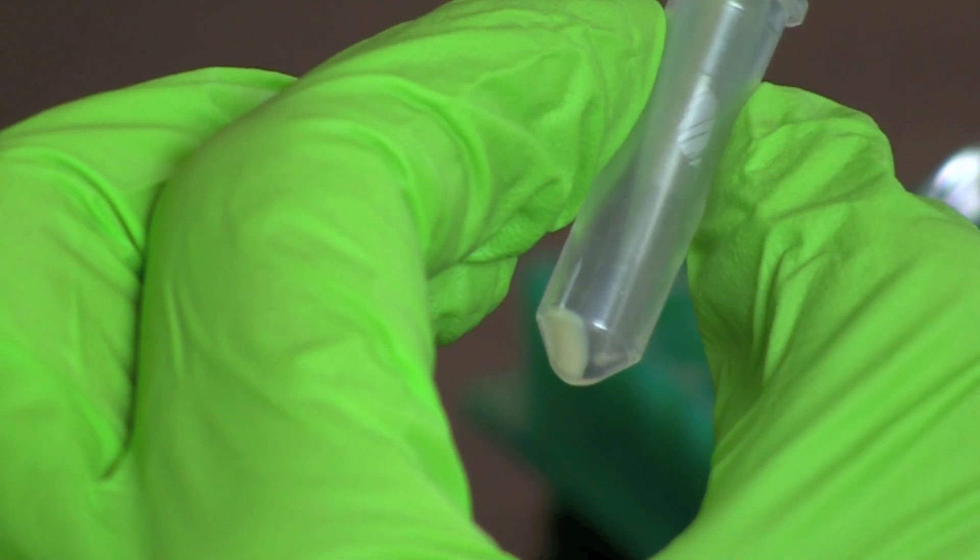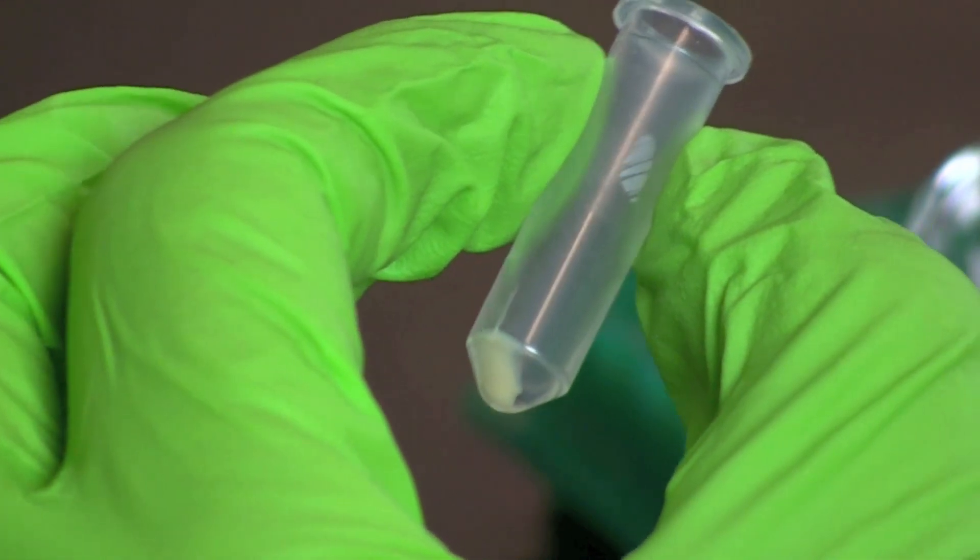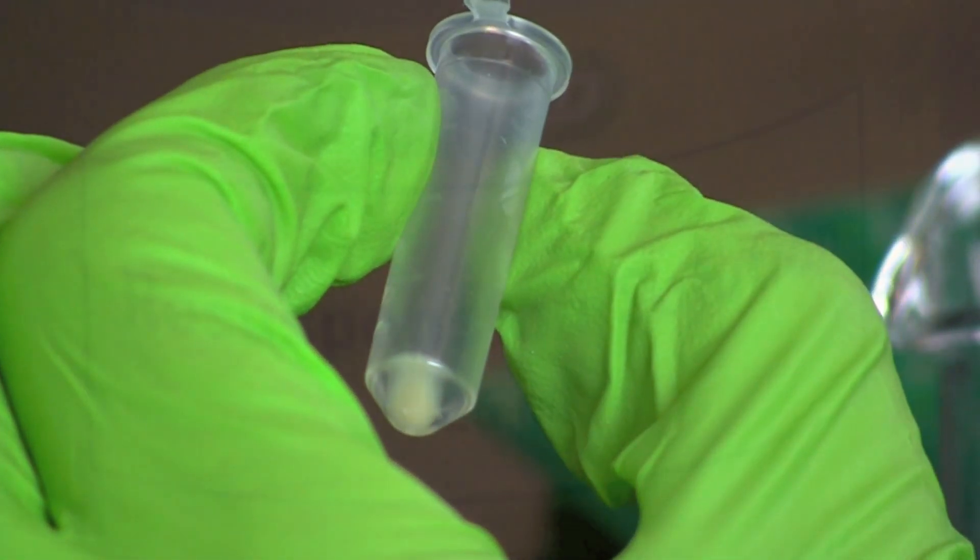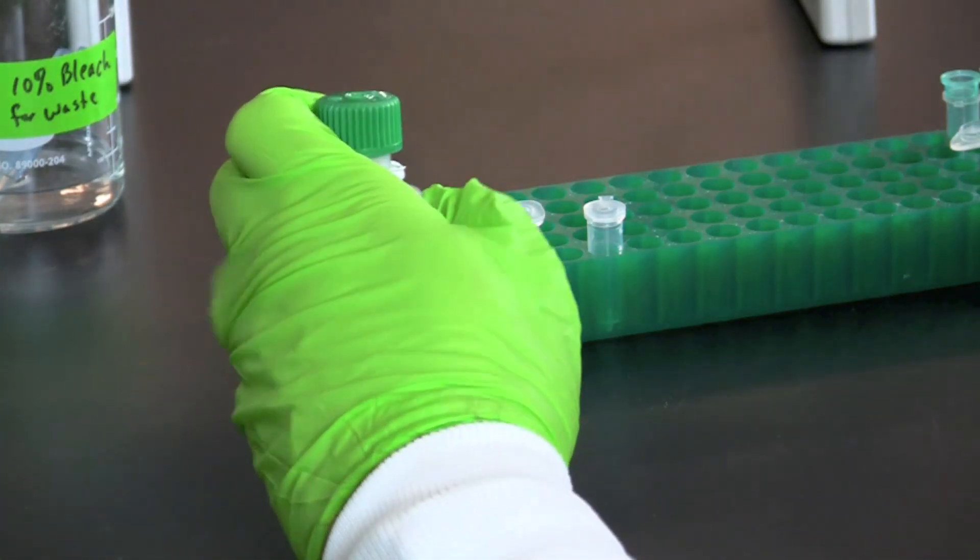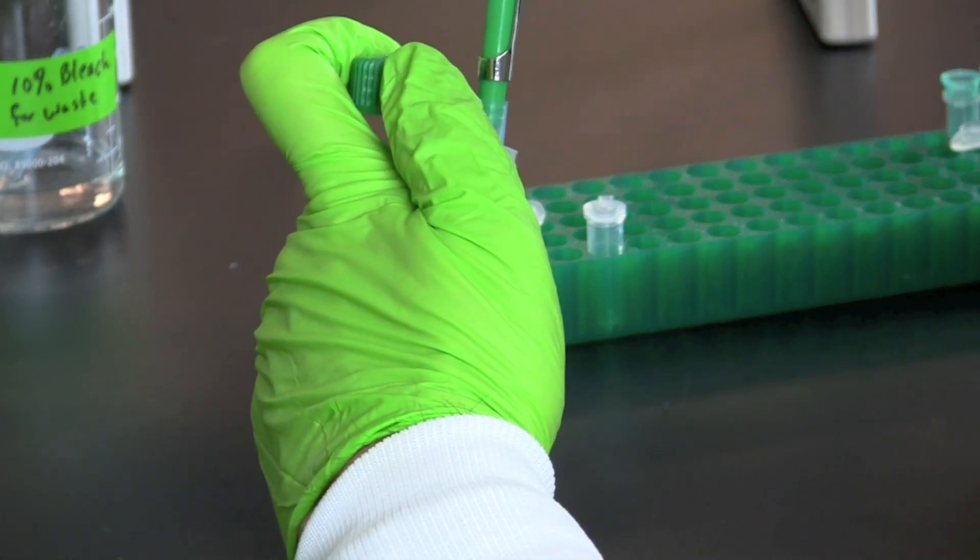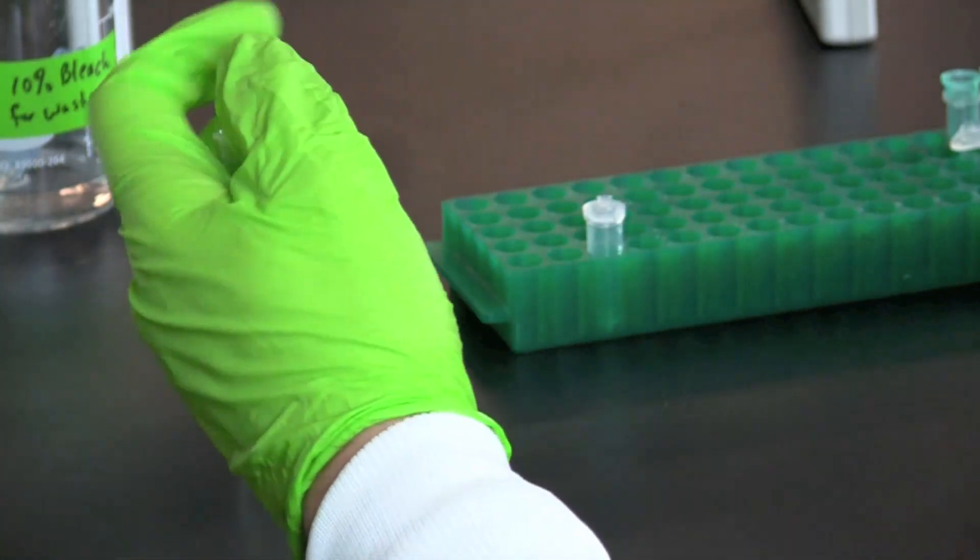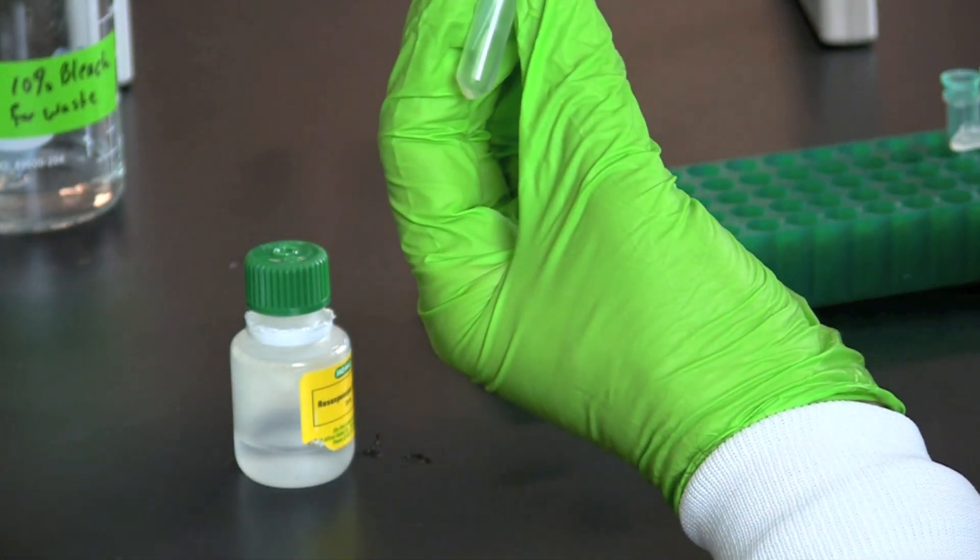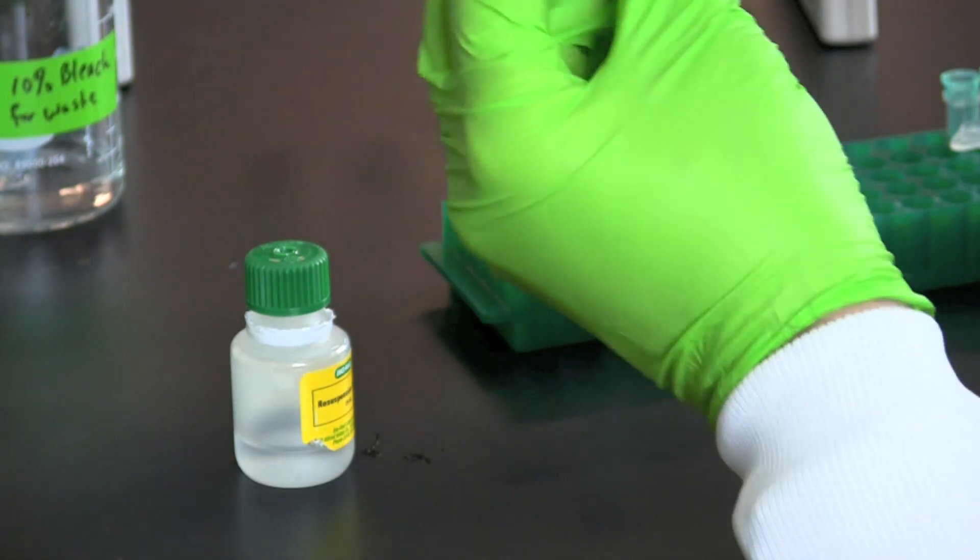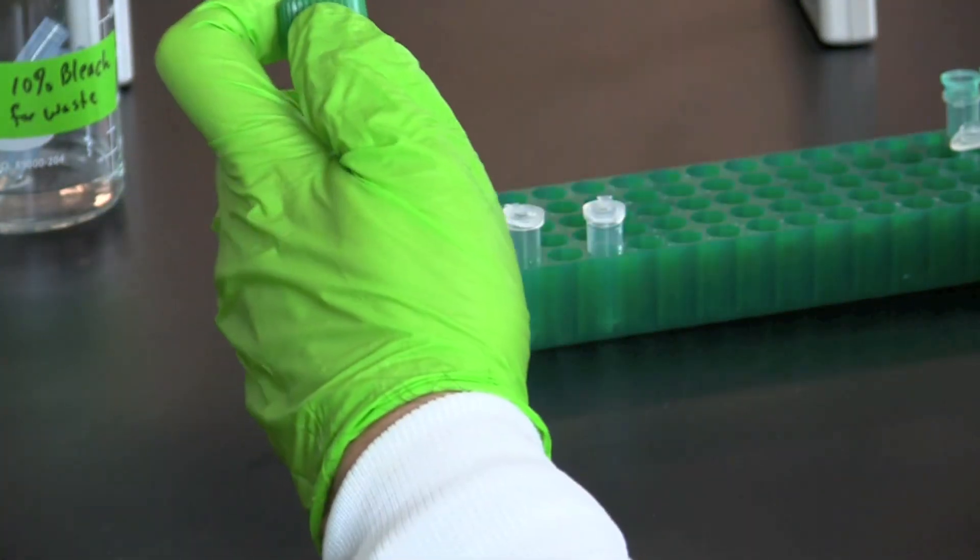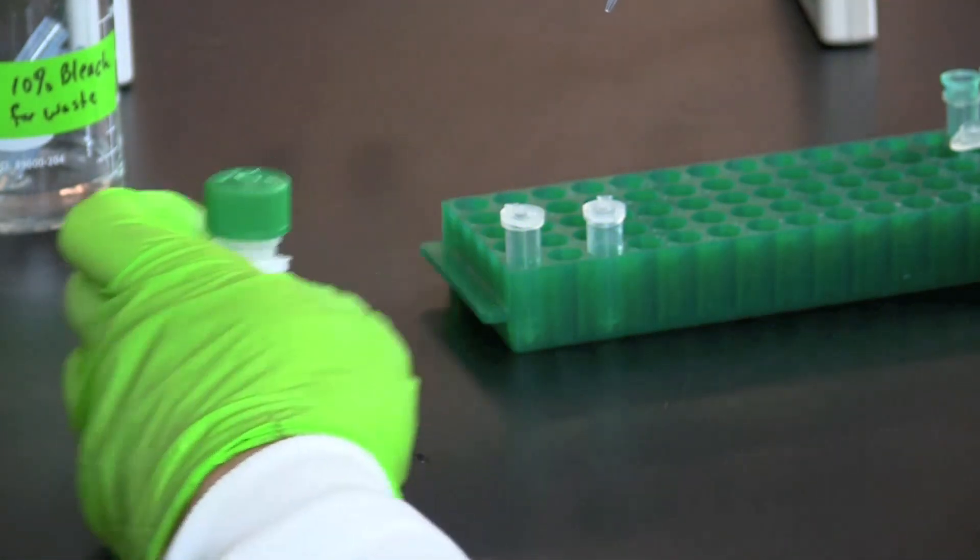When finished, discard the supernatant. Using a fresh tip each time, pipet 250 microliters of resuspension solution into each tube. Repeat this step adding 250 microliters of resuspension solution to the second tube.